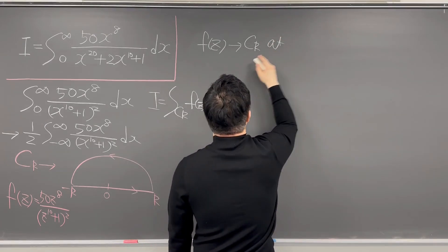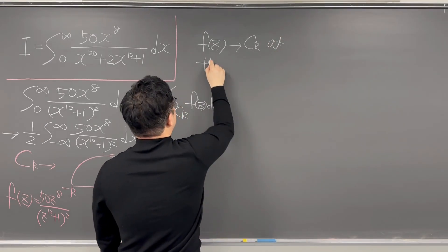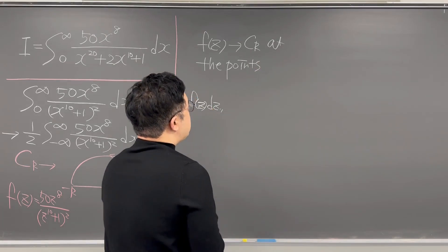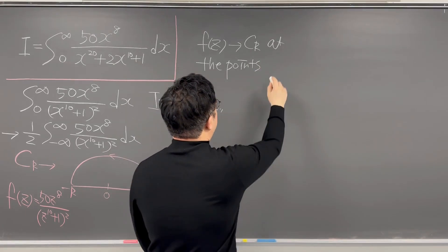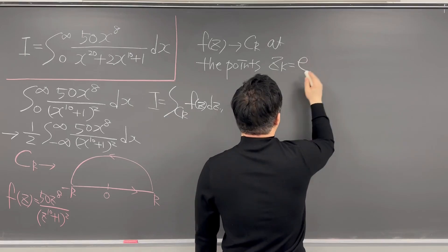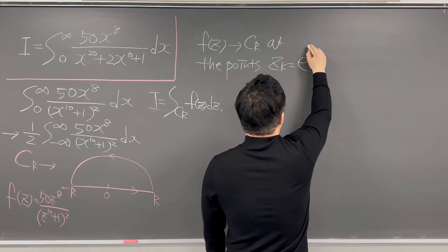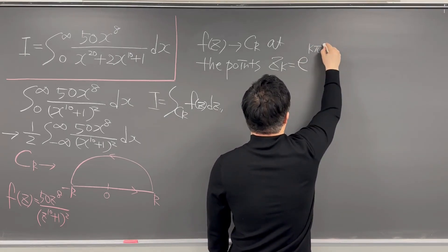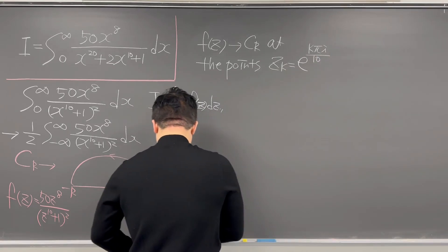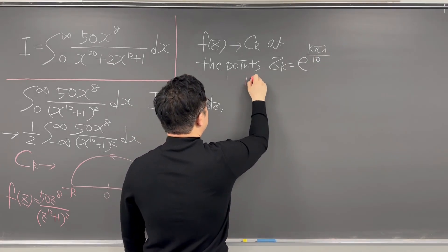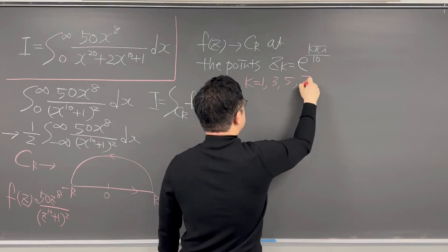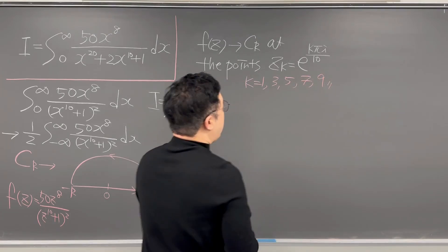At the point Z_k equal to e to the power of k pi i over 10, where k is 1, 3, 5, 7, and 9.